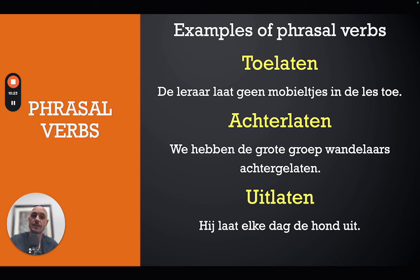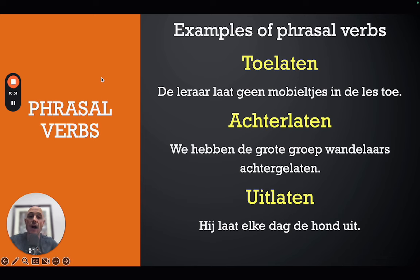Notice the conjugation: 'laten' is the main verb at the front of the sentence, and the preposition 'toe' sits at the end — that's how separable verbs work. The next compound verb is 'achterlaten' — 'to leave behind.' For example, 'we hebben de grote groep wandelaars achtergelaten' — 'we have left the big group of hikers behind.' Notice the past participle 'achtergelaten' — separable verbs form it slightly differently.